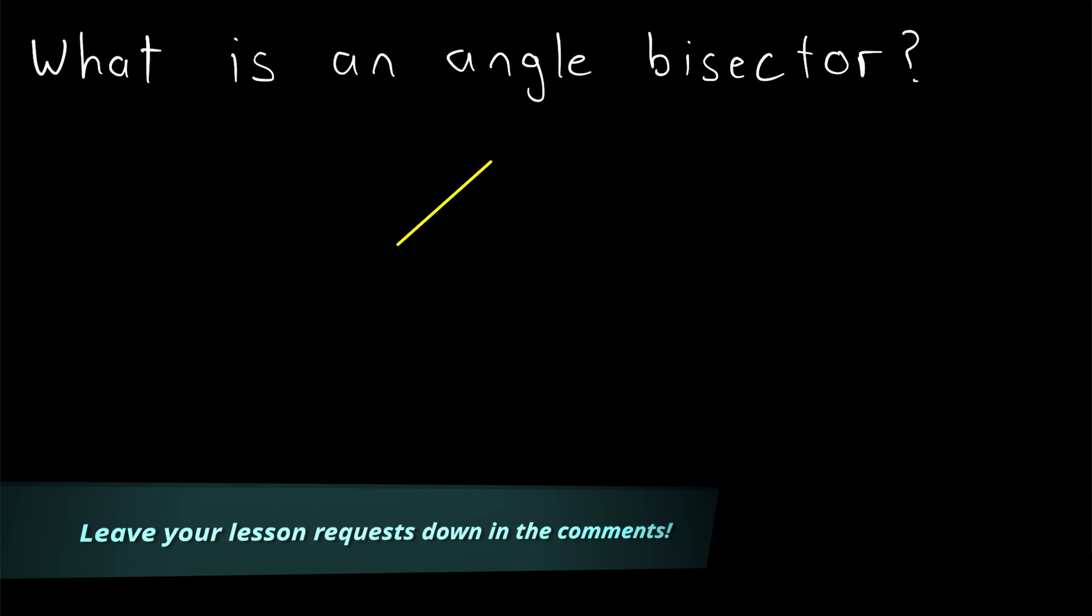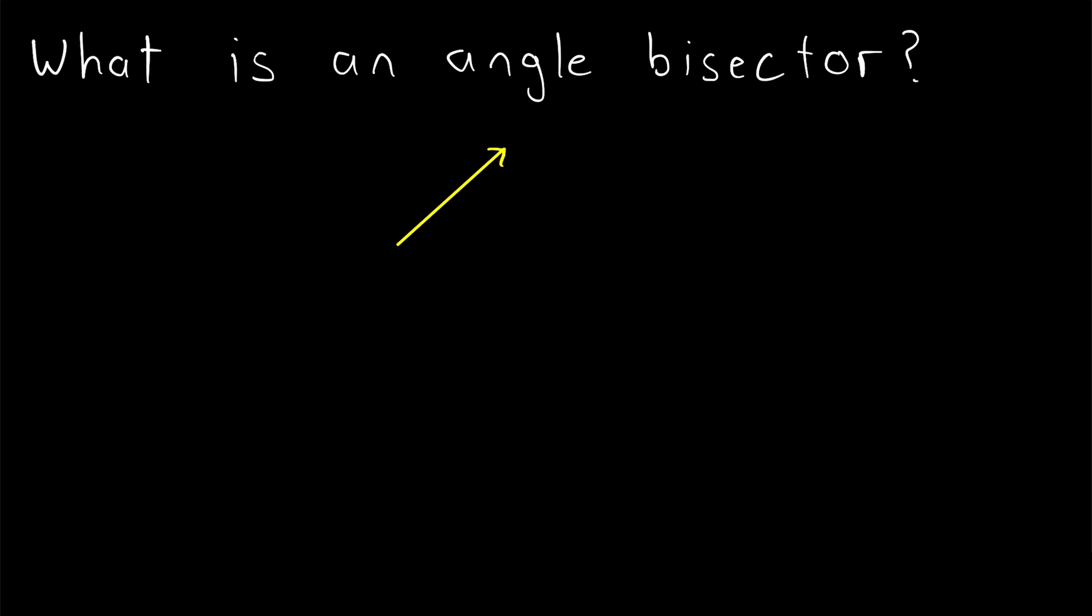Suppose we've got an angle here in yellow, and remember that angles are created by two rays that share a common vertex. The rays are called the sides of the angle, and the point they have in common is called the vertex. Let's call this vertex V, and we'll take a point on each ray that isn't the vertex. Let's call this point U, and this point on the other ray W. Let's go ahead and make this a little bit bigger.